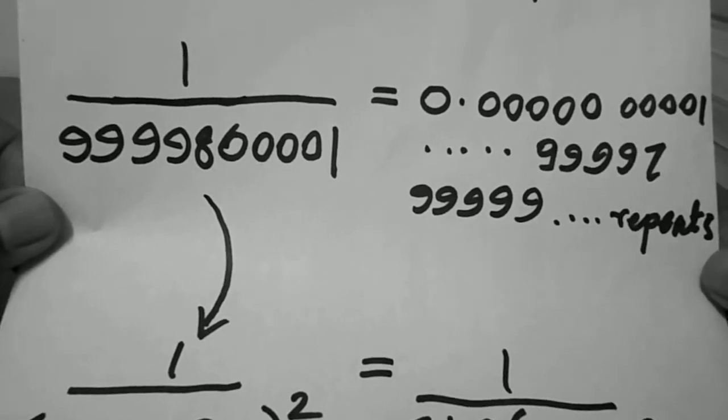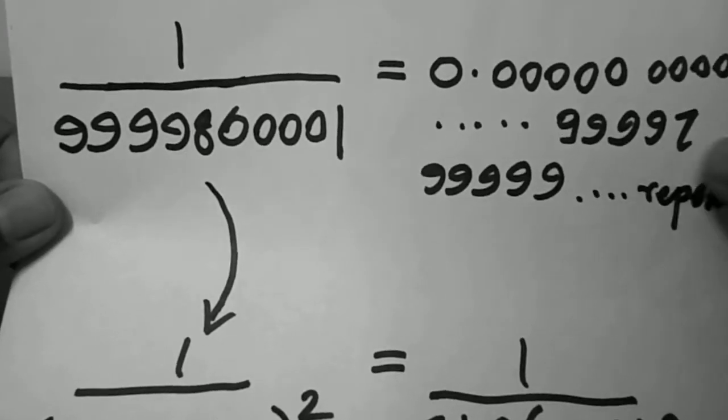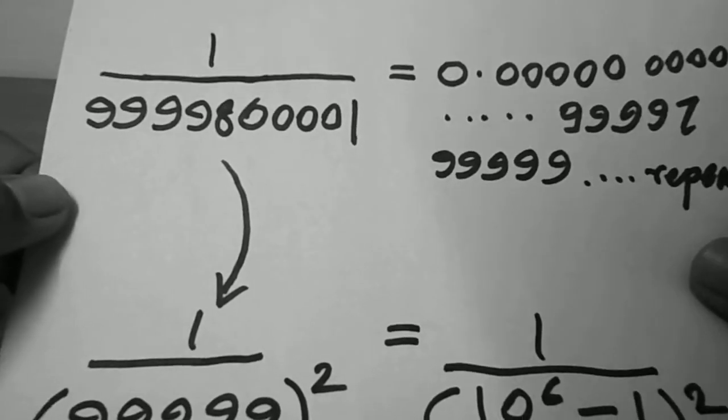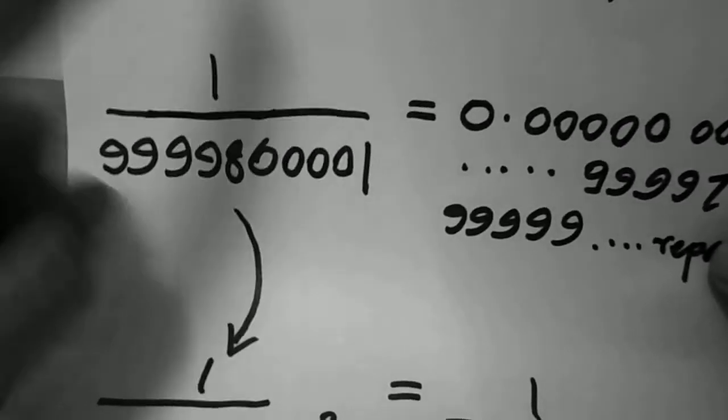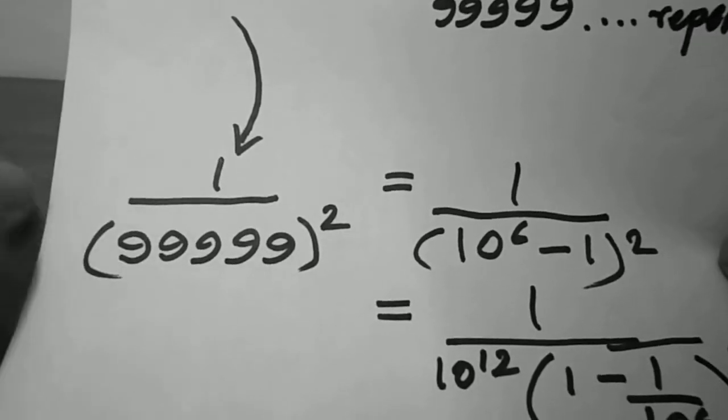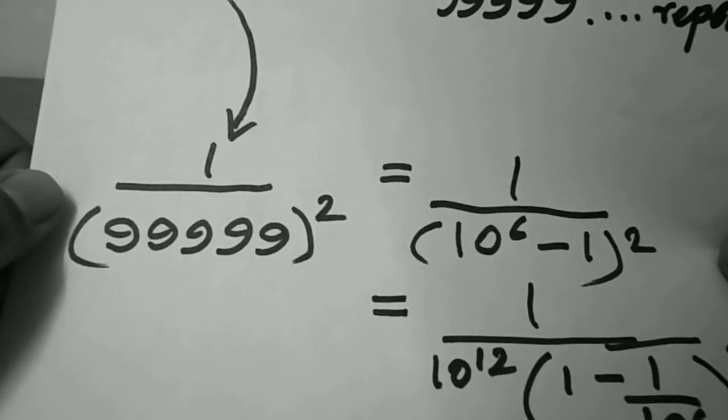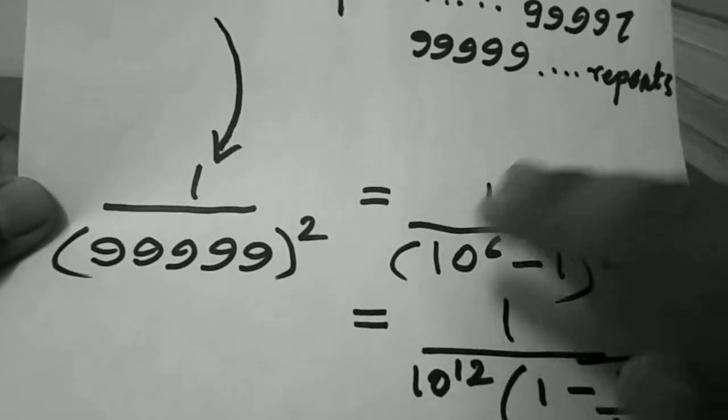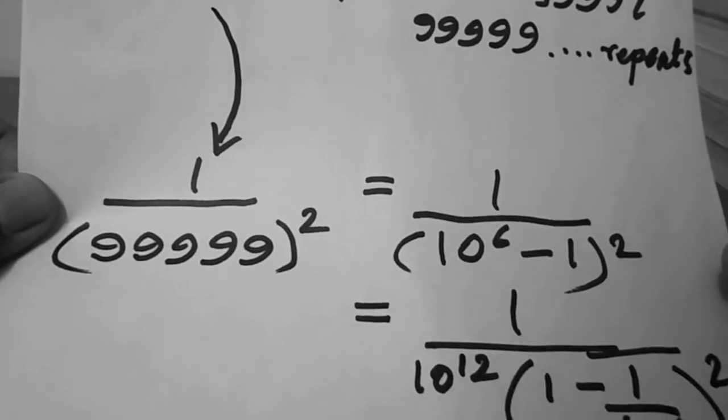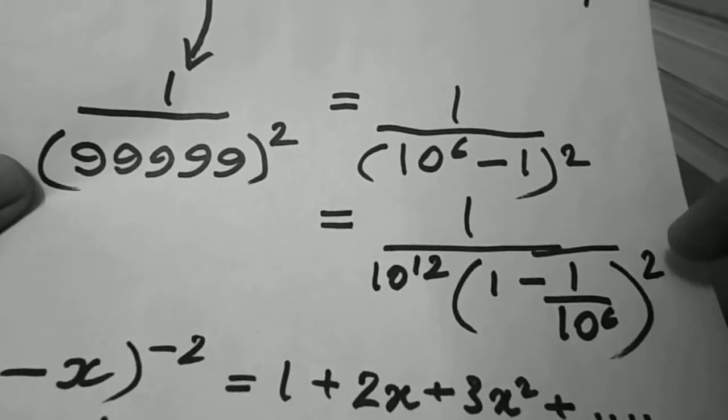So how do we get this decimal expansion? We can reduce our favorite number into this, because it's 99,999 squared, which can be further written like this. Then we do all the formalities.